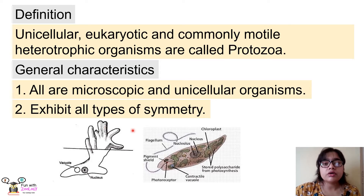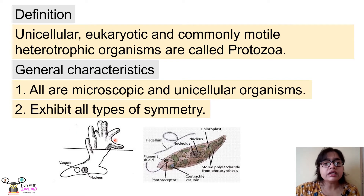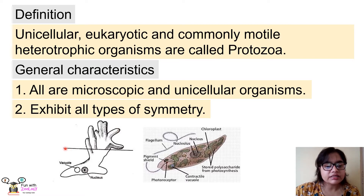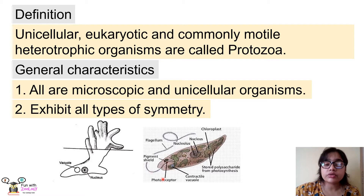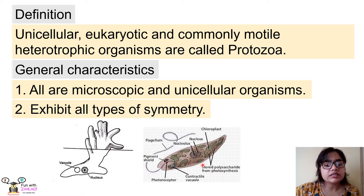The second point is that protozoans show different types of body symmetry. Every animal can be cut into two equal halves if cut through a particular body axis. If an animal cannot be divided into two equal halves through any axis, it is asymmetrical. As shown in the figure of Amoeba, cutting through any plane does not give two equal halves — so Amoeba is asymmetrical. Euglena, when cut through the mid-plane, gives two equal left and right halves — so Euglena shows bilateral symmetry.